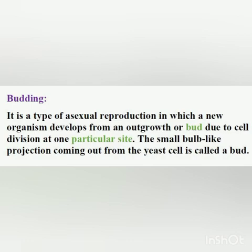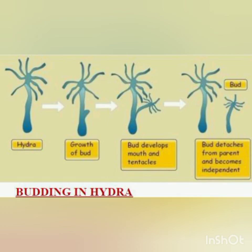Examples of budding are yeast and Hydra. In both, a small bud develops, grows, matures, and finally detaches from the parent and grows as an individual. You can see in the diagram of budding in Hydra: first, a small bud starts to form, then the bud grows, the mouth and tentacles appear, and finally it gets separated from the parent.